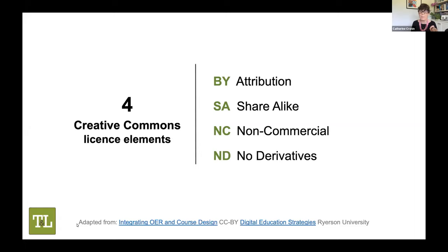NC may also be incompatible with other licenses. ND is used for resources that cannot be adapted or modified in any way, not even translated into another language. We're really not going to focus on ND licenses today because for educational resources the use of ND is quite rare — it doesn't permit revision, adaptation, or translation by the person using those resources.